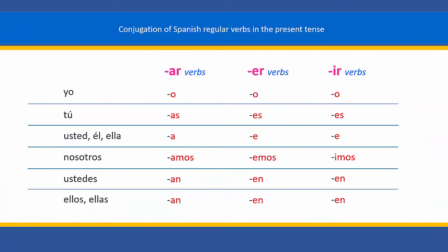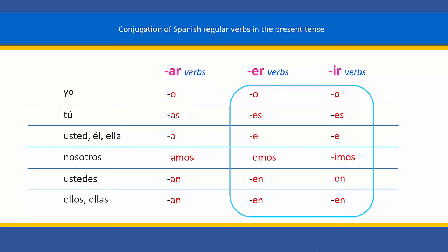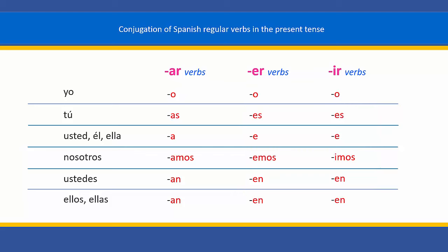Now, in this chart you can see the endings you must use to conjugate the three groups of Spanish regular verbs in the present tense. Notice that the three groups of verbs have the same endings to conjugate the first person singular form. You can also see that the endings for ER and IR verbs are almost identical, except for the first person plural form — the nosotros form. Keep practicing, and once you know these endings, you will be able to figure out the conjugation for the majority of Spanish verbs.